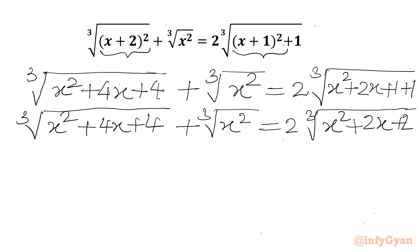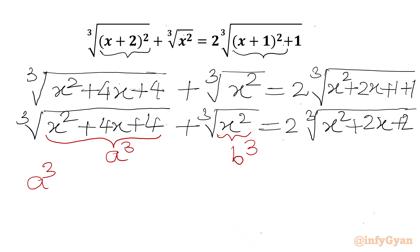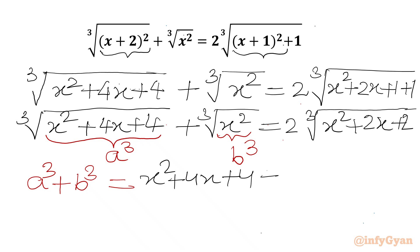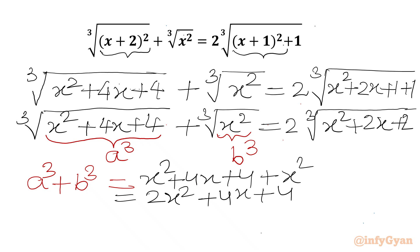Now I will consider our substitution. Let us say the first radicand x² + 4x + 4 equals a³, and x² equals b³. Now I will calculate the value of a³ + b³. So this will be x² + 4x + 4 + x², which gives us 2x² + 4x + 4, and taking 2 common we get x² + 2x + 2.